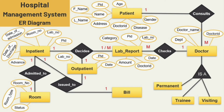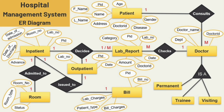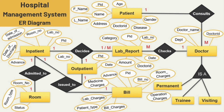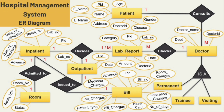For the bill entity I am adding bill number as the key attribute, then patient ID, lab charges, bill charges, patient type, advance, medicine charges, operation charges, health card info, and number of days. This is how you can draw an ER diagram on different topics — this is just an example, and you can add various entities and different attributes as needed.